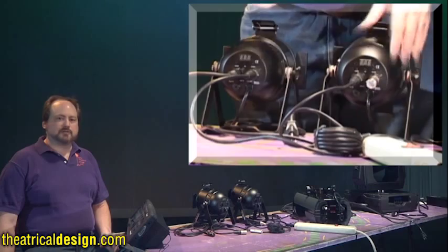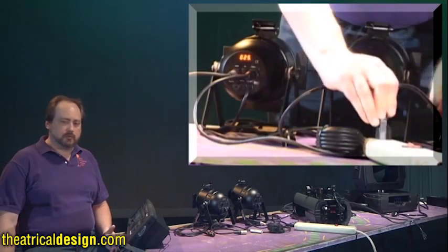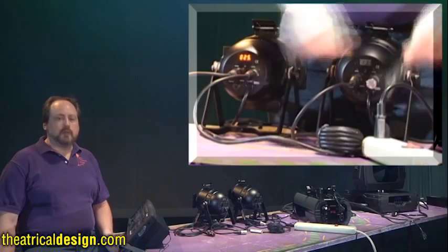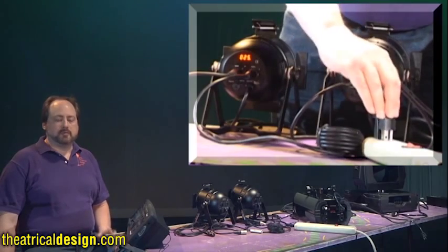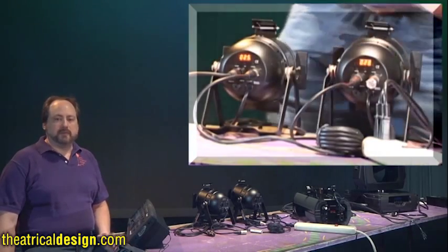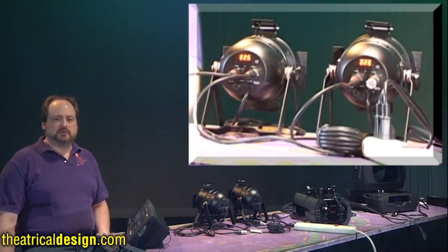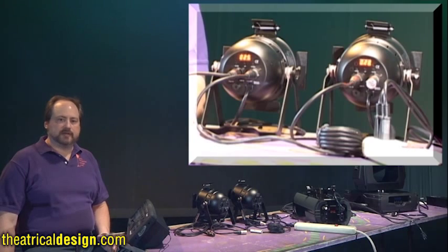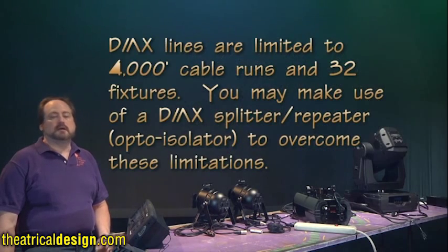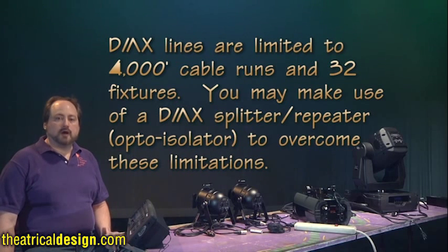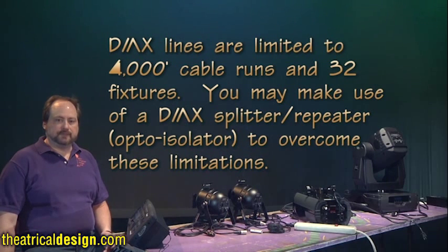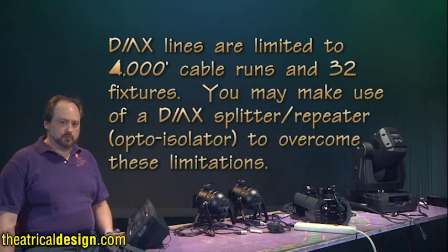It may be possible to ignore the use of a terminator in short cable runs, but the longer the run, the more likely the signal will be reflected back, a probability which can lead to surprising uncontrolled results. So it's best to use a terminator at the end of any DMX signal chain. A DMX splitter, repeater, or opto-isolator can overcome a 4000-foot cable run limit by boosting and retransmitting the signal, and it can increase the number of devices by up to 32 per branch.